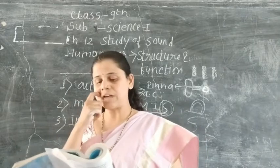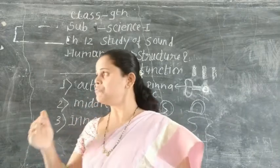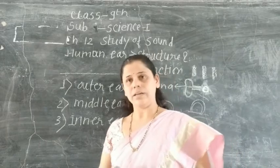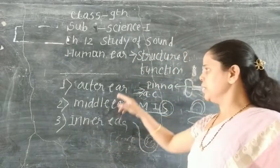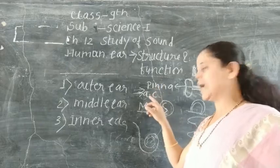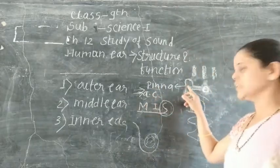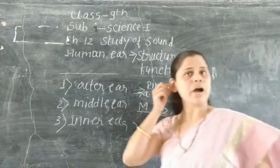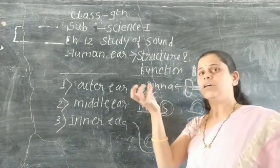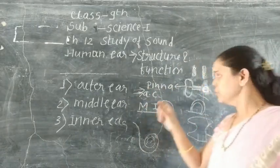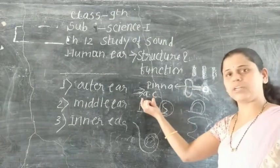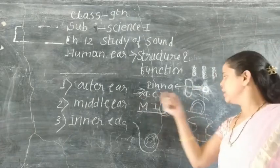Let's again understand the function of each part. In the outer ear, there are two organs: pinna and auditory canal. The pinna is the outer part of our ear that collects the sound waves. This sound wave then goes through the auditory canal, which has a funnel-like shape and helps to collect and pass sound into the middle ear.